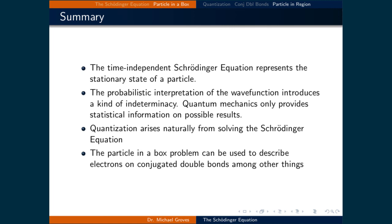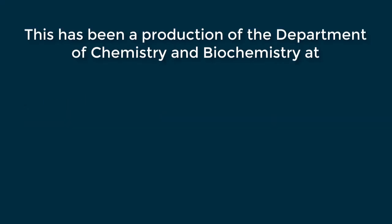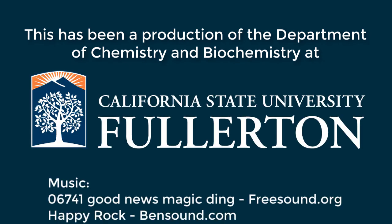The fourth and final point is that the particle-in-a-box problem we solved in this lecture can be used to describe electrons in conjugated double bonds, among other things. This is one way we can explain the observable spectra that we might measure from systems that involve these conjugated double bonds.